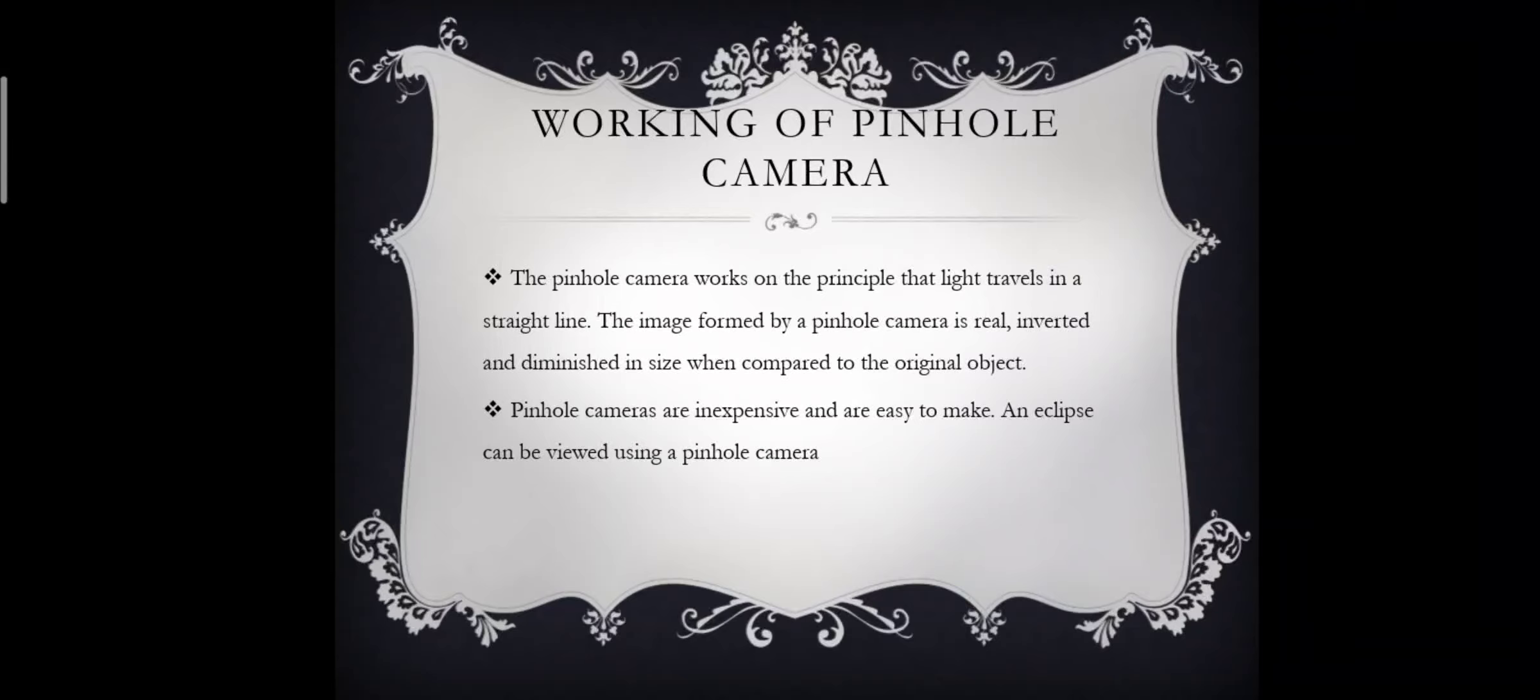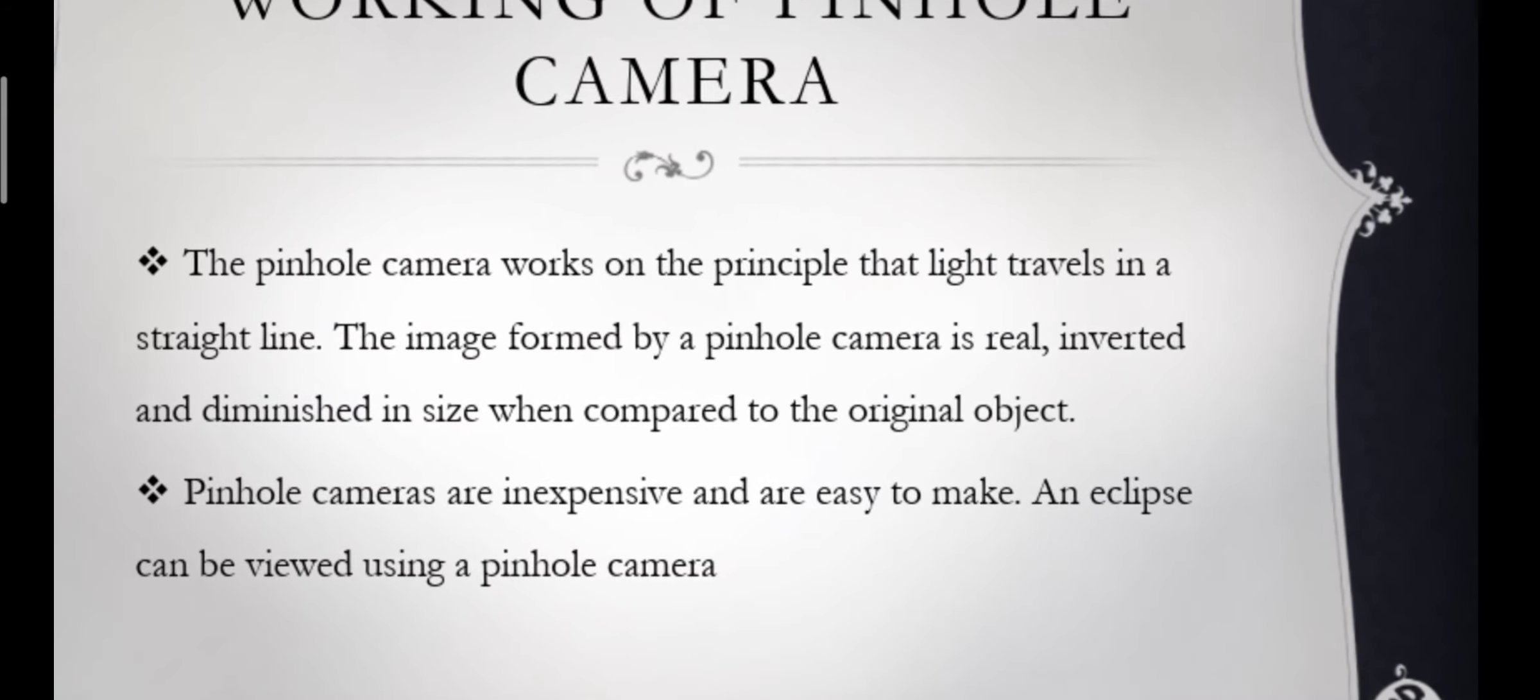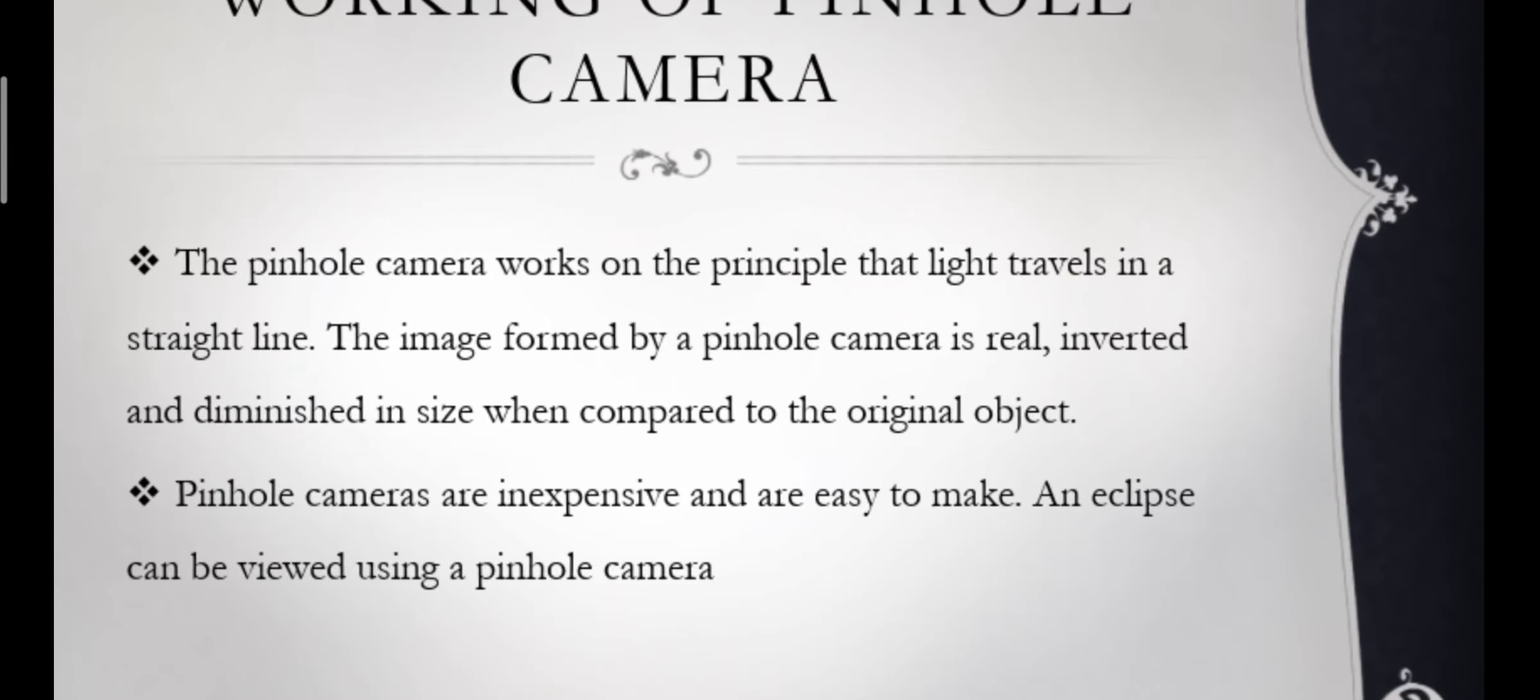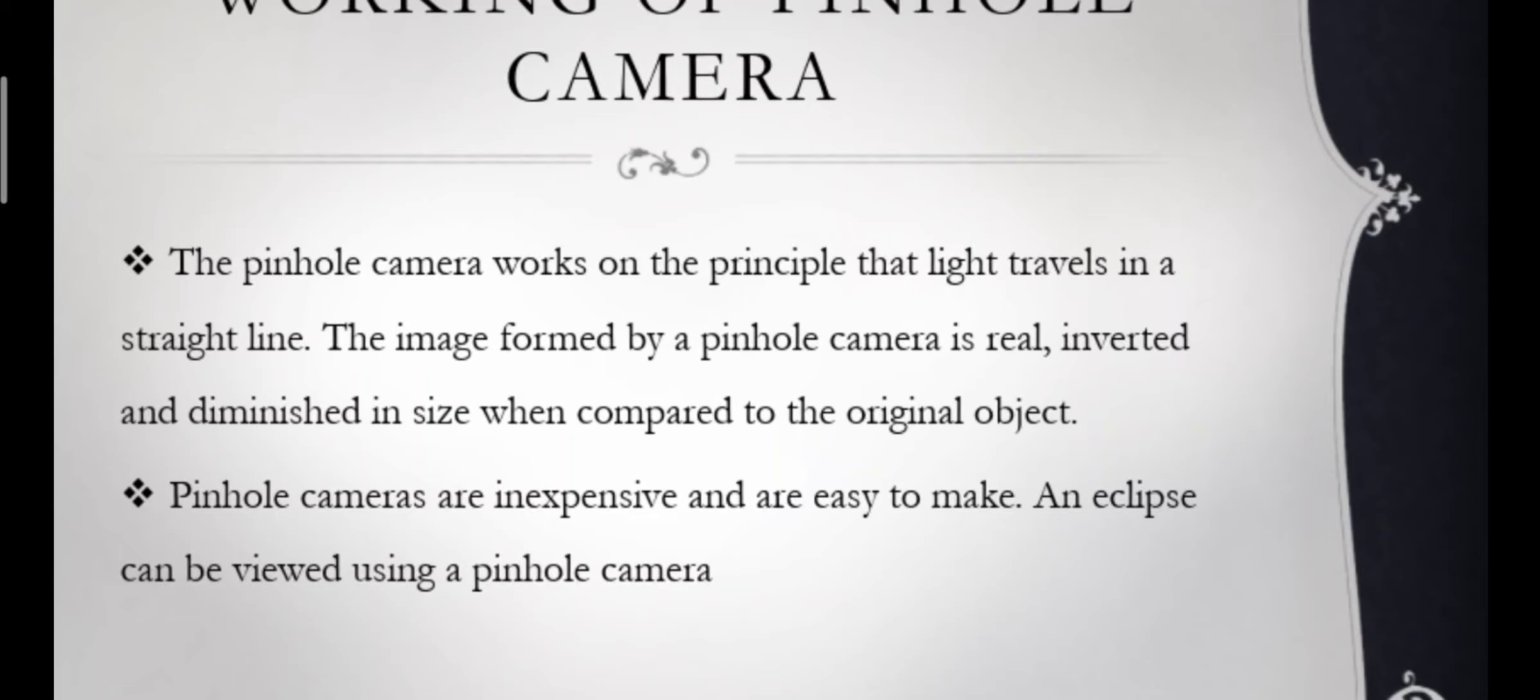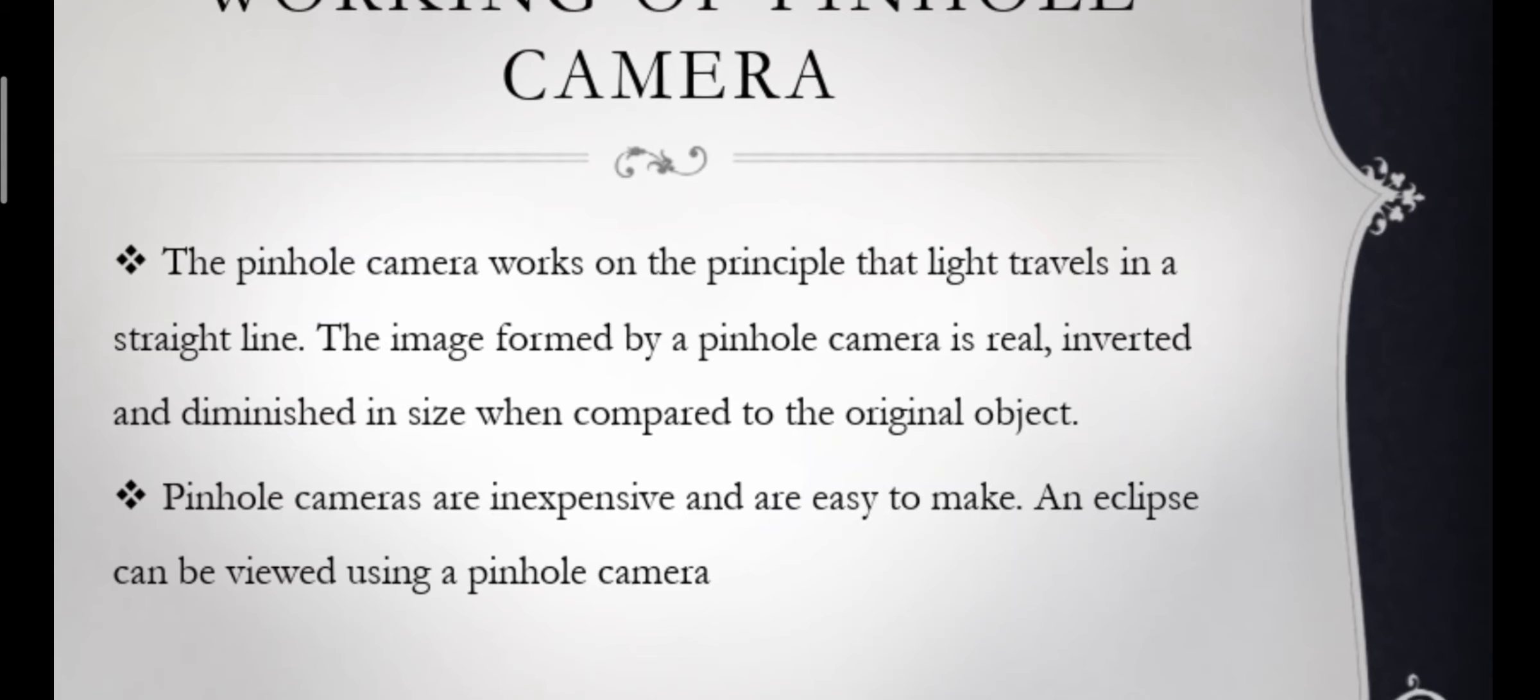The pinhole camera works on the principle that light travels in a straight line. The image formed by a pinhole camera is real, inverted, and diminished in size when compared to the original object. Pinhole cameras are inexpensive and easy to make, and an eclipse can be viewed using a pinhole camera.